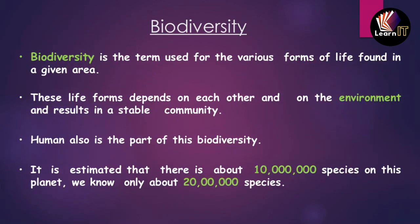The next topic is biodiversity. Biodiversity is a term used for the various forms of life found in a given area. In a particular place there can be different types of microorganisms, different kinds of fishes, and different types of animals all living together — that is biodiversity. For example, in a temperate area, polar bears are not present, meaning the polar bear is not part of that diversity. These life forms depend on each other and on the environment, resulting in a stable community where all organisms live in harmony.